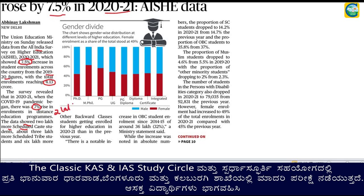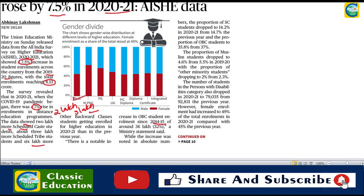Scheduled Caste enrollment data shows significant numbers. Other Backward Classes - OBC students' enrollment has increased. The number of OBC students enrolled has gone up. The absolute numbers for SC, ST, and OBC enrollment have all increased under this survey period.